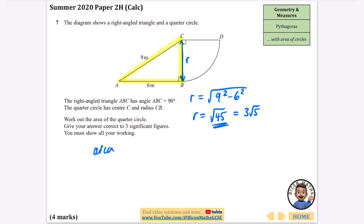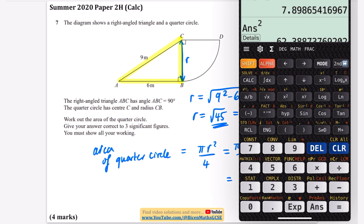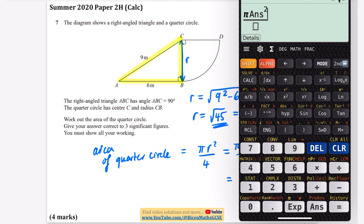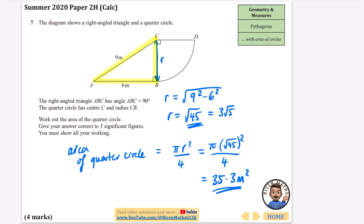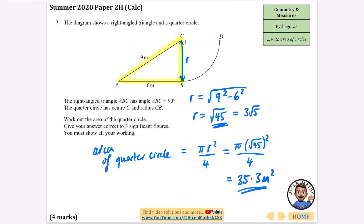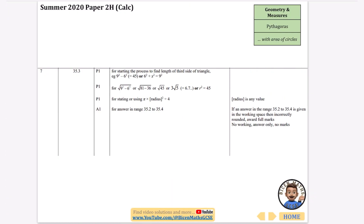The area of a quarter circle is pi times the radius squared divided by four. I've already got root 45 stored in my calculator, so I'm going to do pi times my answer squared divided by four. That gives 35.3 metres squared to three significant figures. And there is our 35.3. If you wrote the radius as a decimal, you'd just type that decimal in instead.